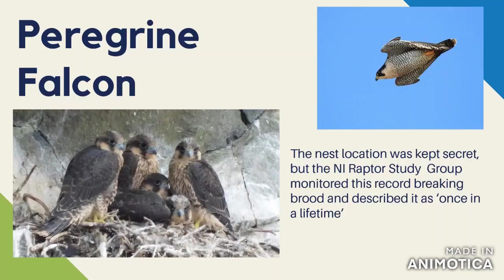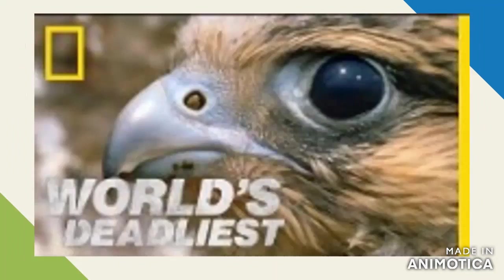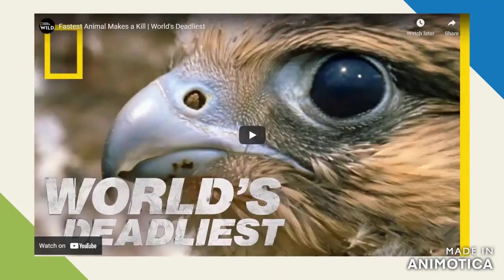Peregrine falcons feed mainly on medium-sized birds, usually pigeons, and they are famous for being the fastest animal on the planet. When they move into a stoop — the hunting technique I'll show you in this video — they can reach about 200 miles per hour. They fly down and knock the pigeon with their talons or punch it on the back of the head, knocking it unconscious or dead in the air, then catch it and eat it. They are incredible birds.